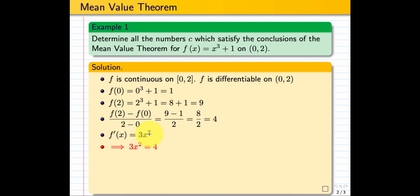According to the Mean Value Theorem, f'(c) equals [f(b) minus f(a)] over [b minus a]. So 3x² equals 4. If we solve this, we get x equals plus or minus 1.1547. We get plus and minus 2 values because we have even power.